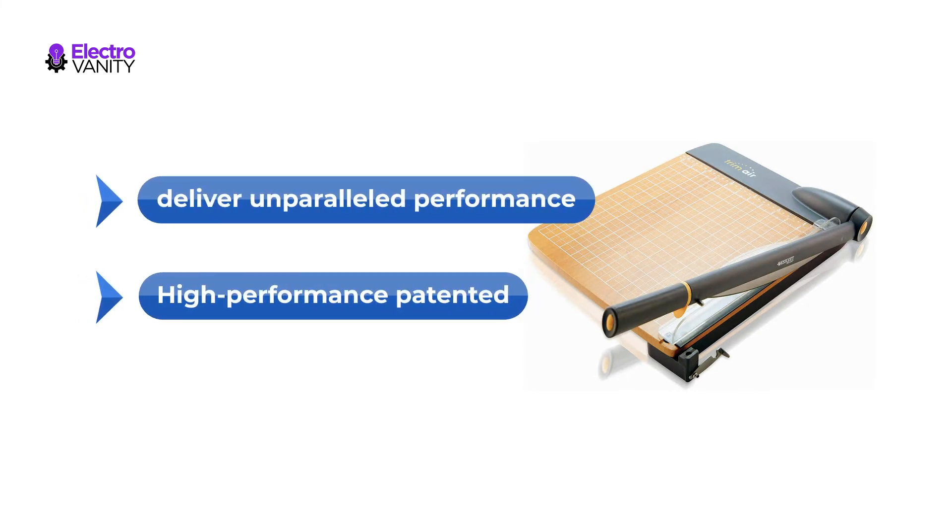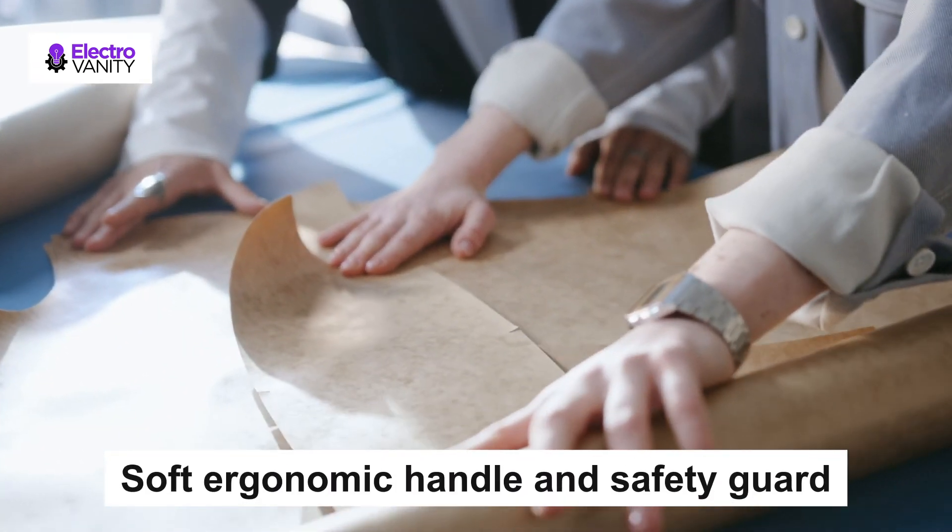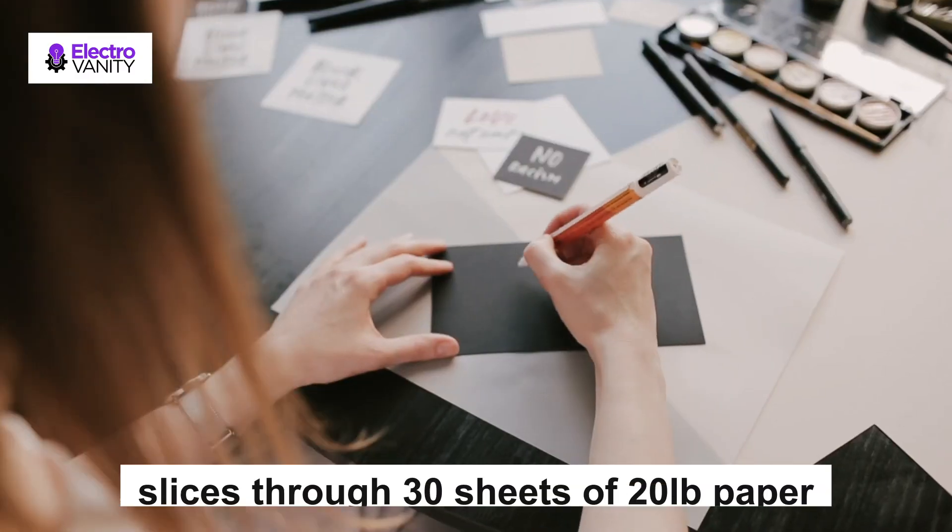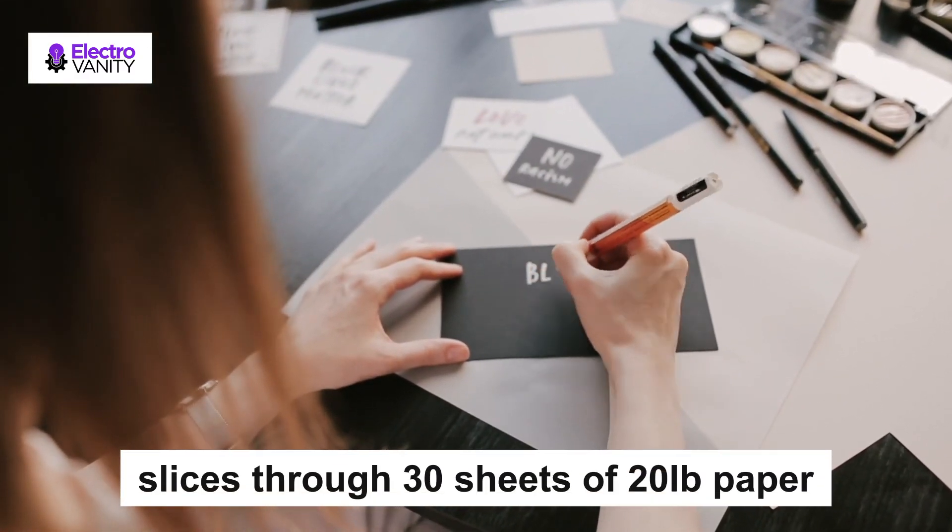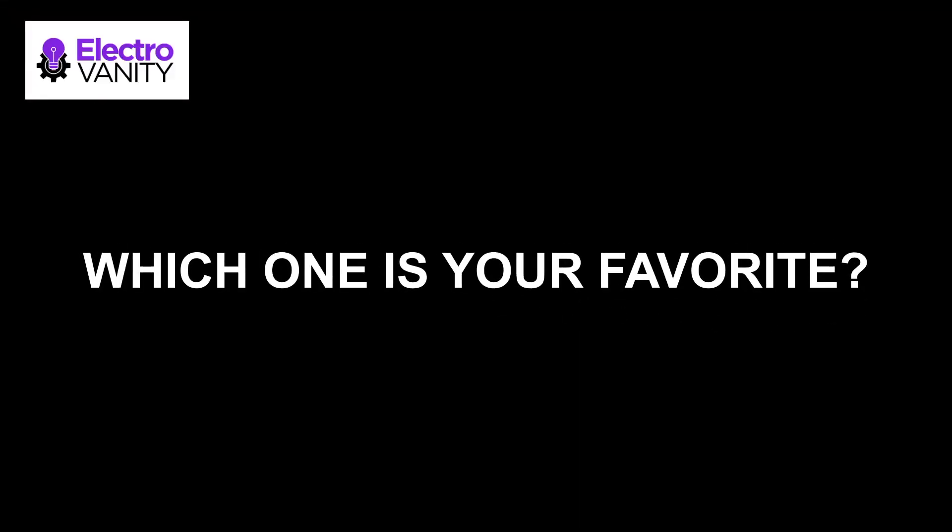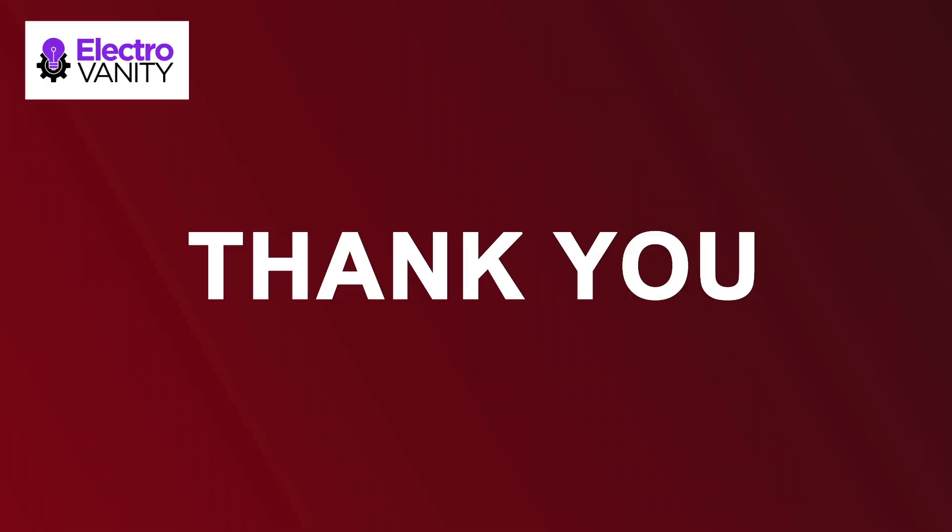High performance patented titanium bonded blade provides three times the strength of stainless steel blades and will stay sharper longer. Soft ergonomic handle and safety guard gives you total cutting control. Paper slicer easily slices through 30 sheets of 20 pound paper at a time.